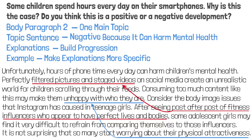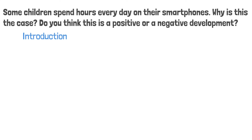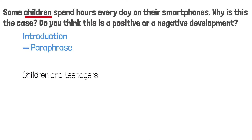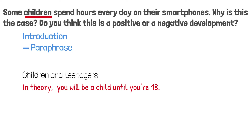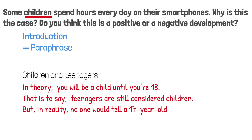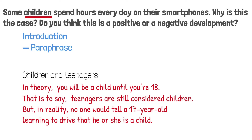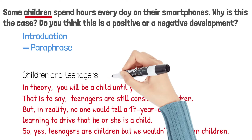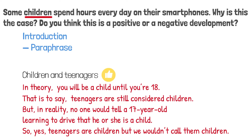This is the entire body paragraph 2. Next, the introductory paragraph. As you probably know, we can first paraphrase the question statement. In terms of 'children,' I will instead say 'children and teenagers.' In theory, you will be a child until you are 18 — teenagers are still considered children. But in reality, no one would tell a 17-year-old learning to drive that he or she is a child. So 'children and teenagers' is actually an improvement of the original.